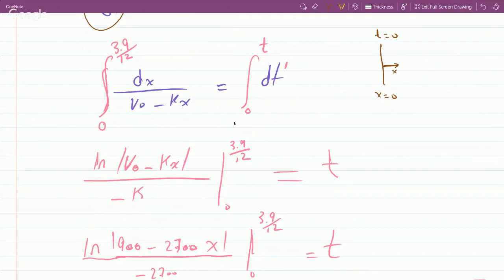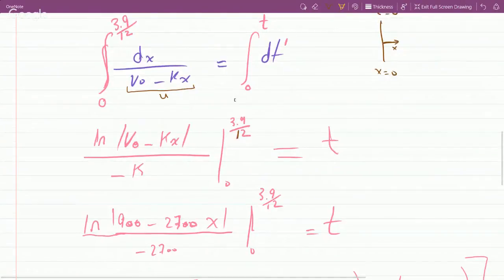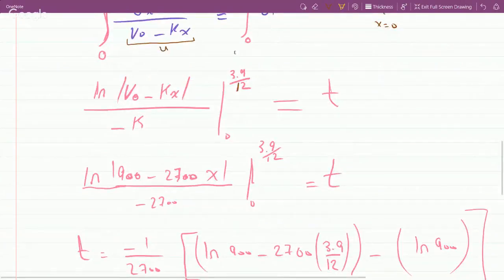You could use substitution and call the denominator u if you want to see the longer version of this integration, but it's a fairly straightforward integration. And I evaluate it from 0 to 3.9 over 12 because the right hand side will just get you t.